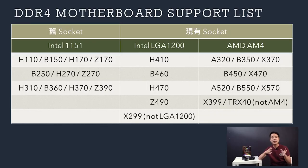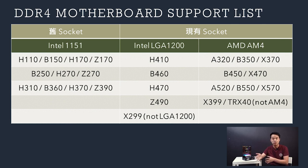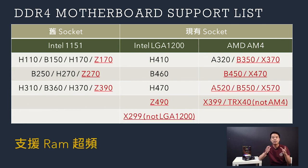Note that not all motherboards support RAM overclocking. For Intel, XMP is only available on Z and X series boards. For AMD, it is supported on B450, B520, and X570 motherboards. This is important when choosing a board if you want to run RAM at its full rated speed.